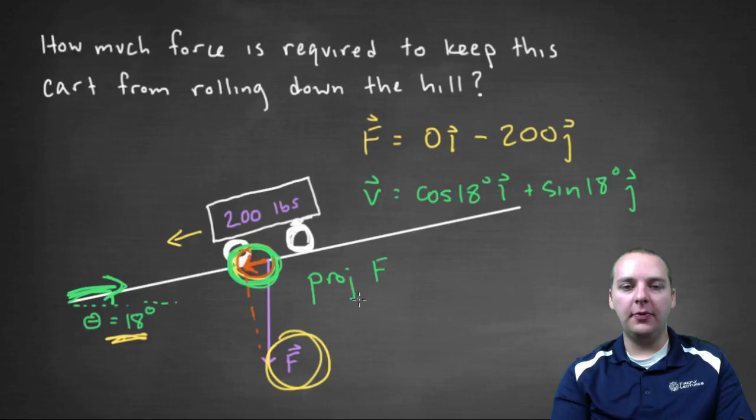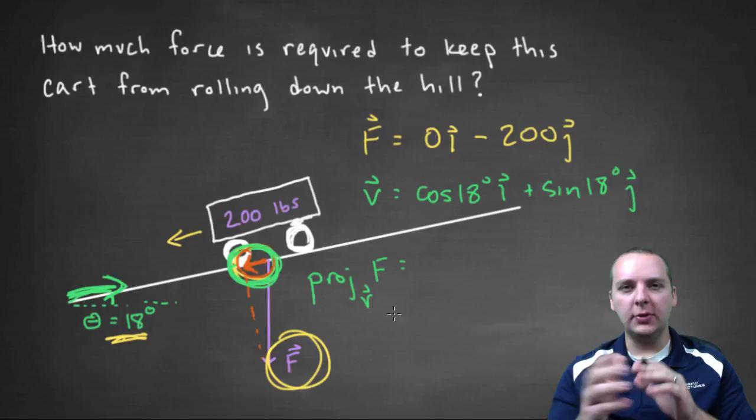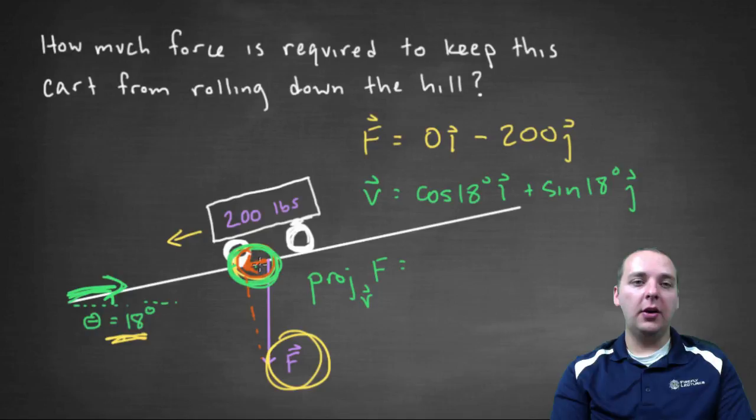That's the projection of F onto vector V. That negative 61.8 times cosine 18i plus sine 18j. That's this guy right here.